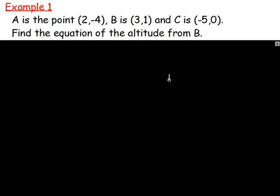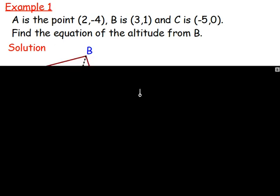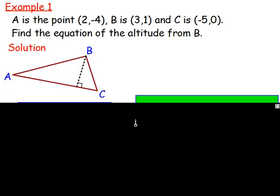I'll do one example, calling it Example 1. A is the point (2,-4), B is (3,1), and C is (-5,0). Find the equation of the altitude from B. Whenever you get a question like this, you're best just doing a sketch of a triangle and filling in what you know. You're asked to work out the equation of the altitude from B, so it's the line going from B across to the other side, meeting at a right angle.